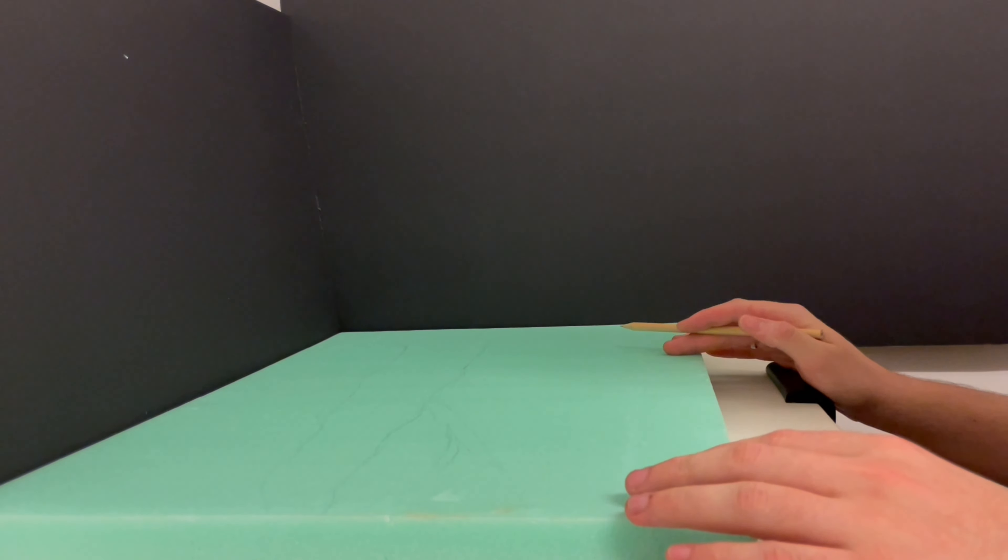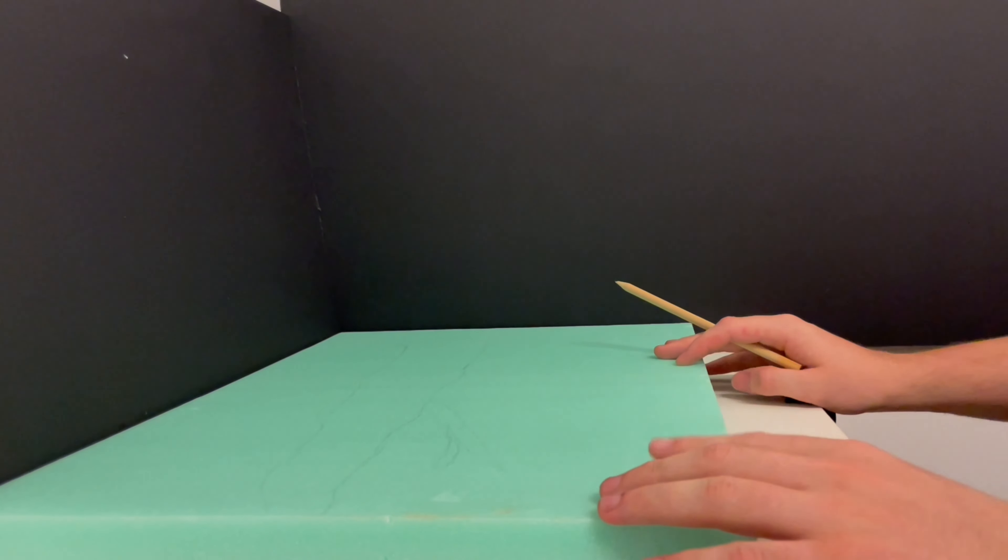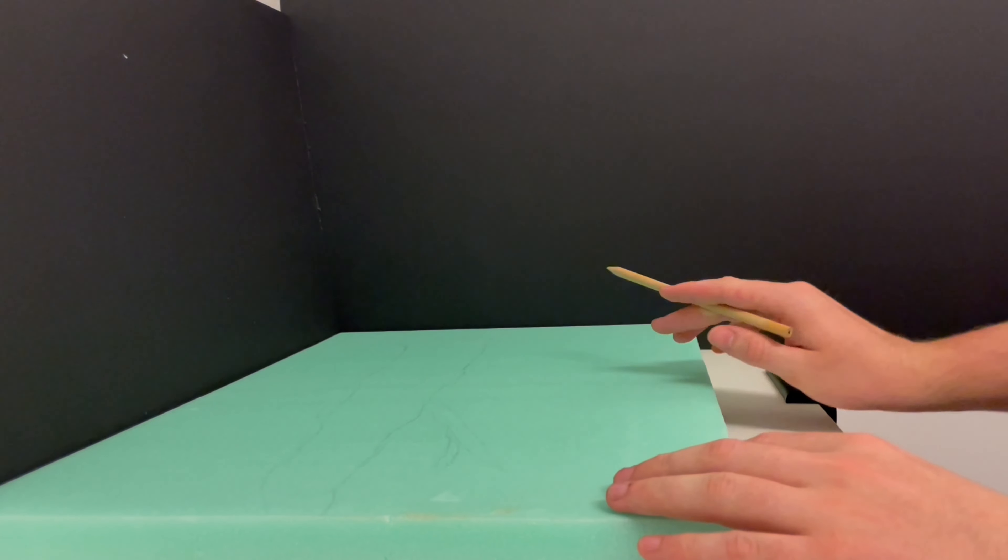I start out with this XPS foam board that I picked up from the local hardware and have cut down to size. The next thing I do is just sketch out a rough design for the lava spout and the lava river to flow.